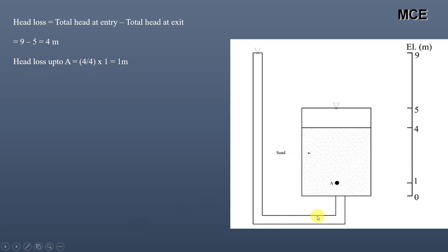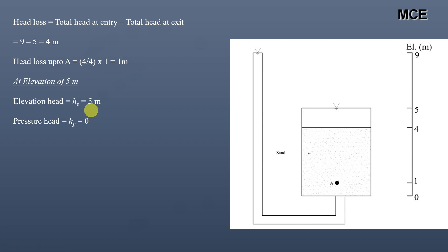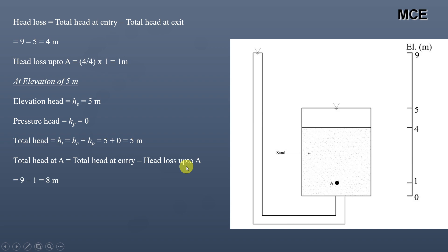Head loss up to point A is again calculated using the theory of proportions. The total length of the soil sample is 4 meters, total head loss is 4 meters, and the distance of point A from the entry end is 1 meter. So head loss up to A is 4 divided by 4 multiplied by 1, which equals 1 meter. At the elevation of 5 meters, the elevation head is 5 meters and pressure head is 0 (contact with atmosphere), so total head is 5 meters. Total head at A is total head at entry minus head loss up to A: 9 minus 1, which equals 8 meters. We first calculate total head, then subtract elevation head to get pressure head at A.